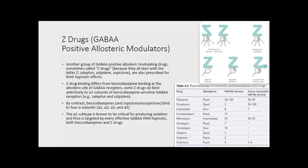Z-drugs — GABA-A positive allosteric modulators. Another group of GABA-A positive allosteric modulator drugs, sometimes called Z-drugs because they all start with the letter Z — zolpidem, zopiclone — are also prescribed for their hypnotic effects. Z-drug binding differs from benzodiazepine binding at the allosteric site of GABA-A receptors. Some Z-drugs bind selectively to alpha-1 subunits of benzodiazepine-sensitive GABA-A receptors, whereas benzodiazepines bind to four alpha subunits: alpha-1, alpha-2, alpha-3, and alpha-5. The alpha-1 subunit is known to be critical for producing sedation and is targeted by every effective GABA-A hypnotic, both benzodiazepines and Z-drugs.